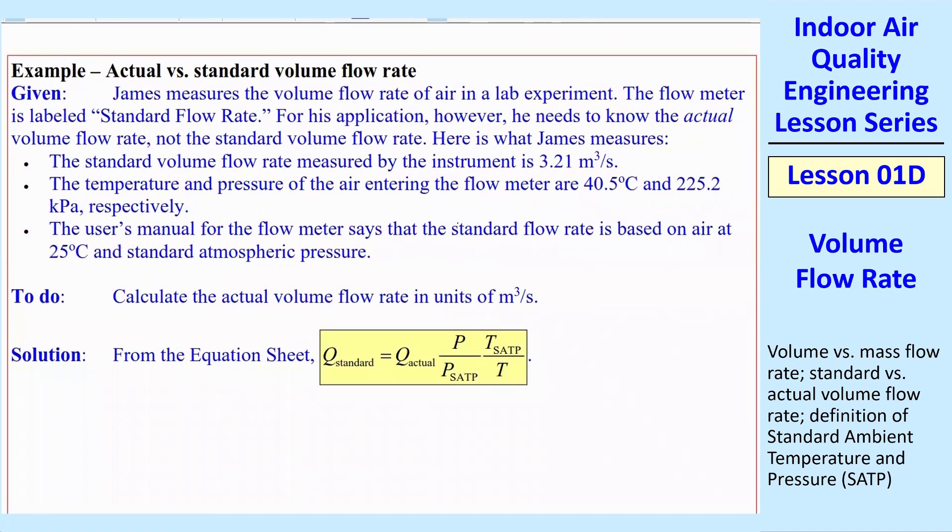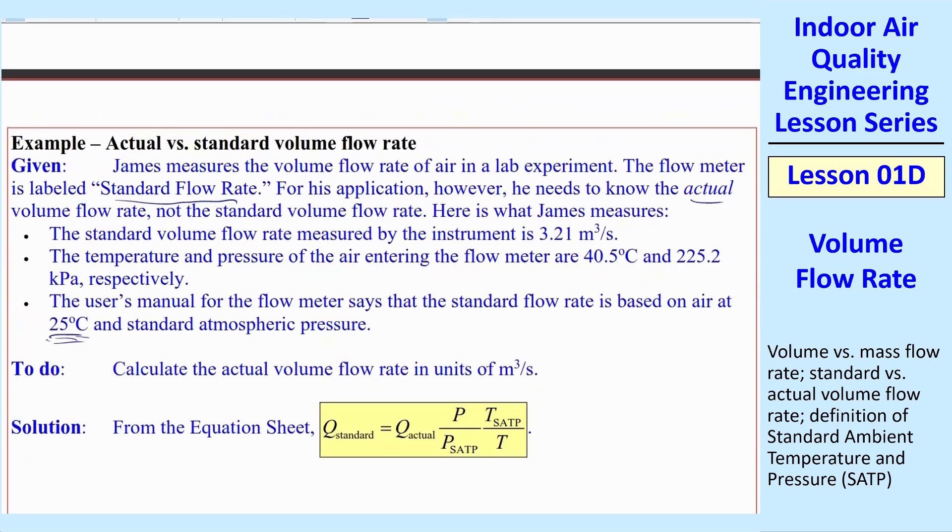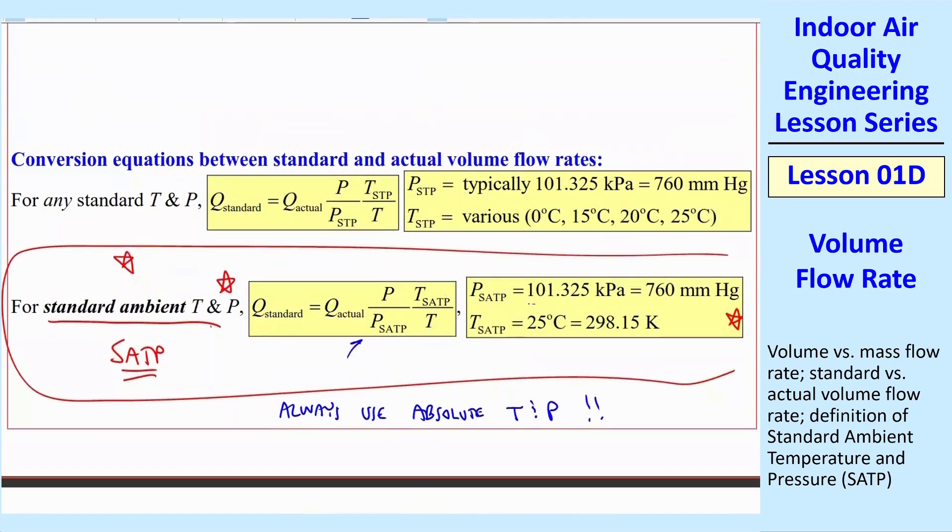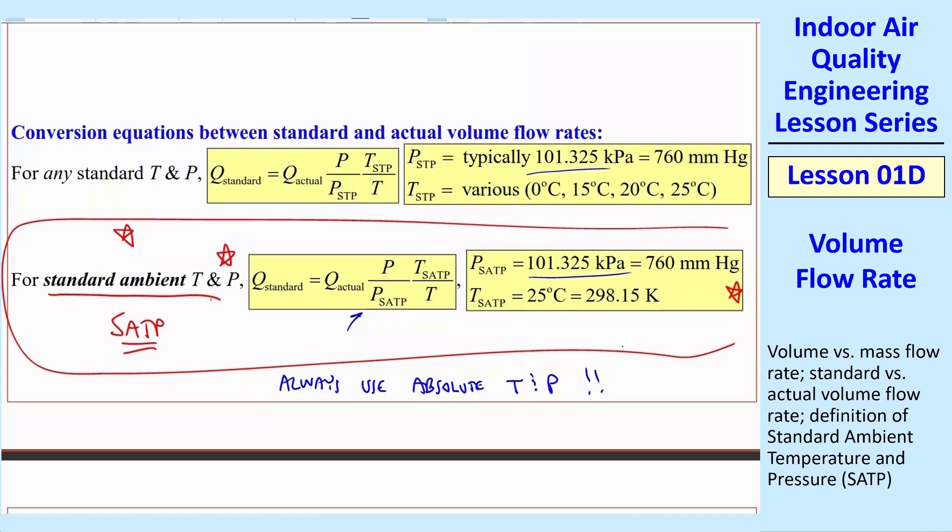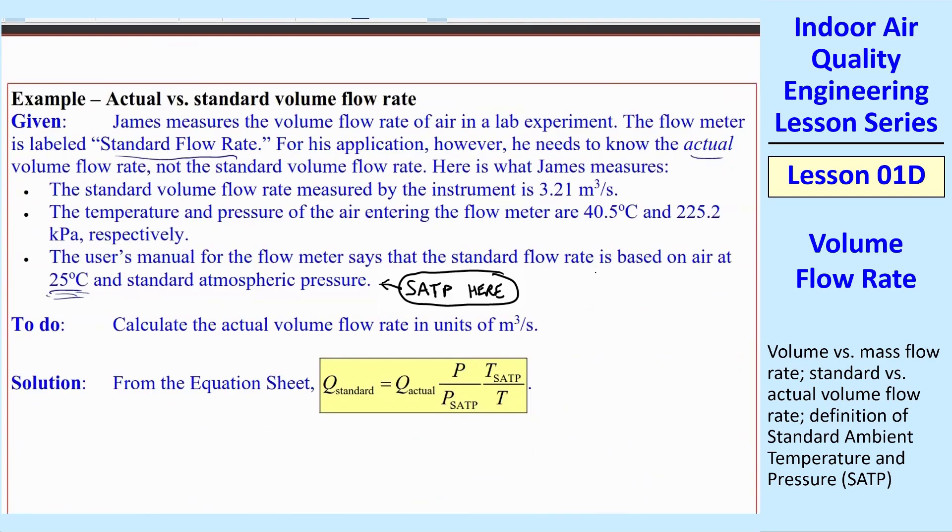Let's do some examples. Here's an example of James measures the volume flow rate of air in a lab experiment. The flow meter is labeled standard flow rate. But he needs to know the actual flow rate, volume flow rate. So he measures with his instrument the standard volume flow rate, the temperature, and the pressure. And his flow meter says it's based on 25 degrees C and standard atmospheric pressure. Notice that the pressure is the same in almost all these standards. It's only the temperature that is a variable. But here it is SATP, standard atmospheric temperature and pressure, 25 degrees C and standard atmospheric pressure. So how do we calculate the actual volume flow rate?